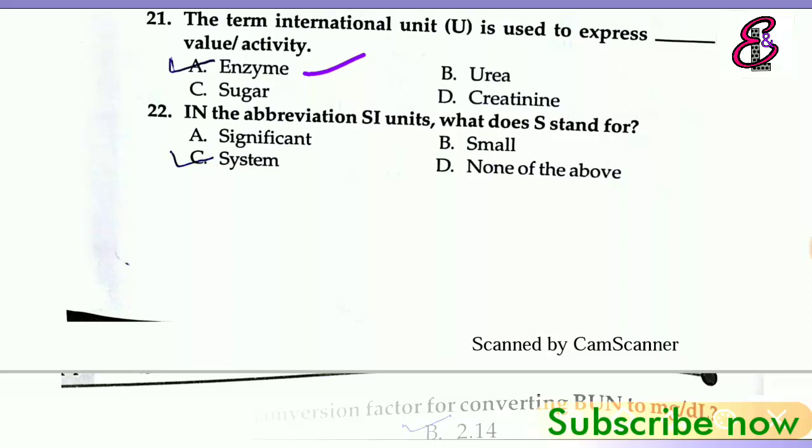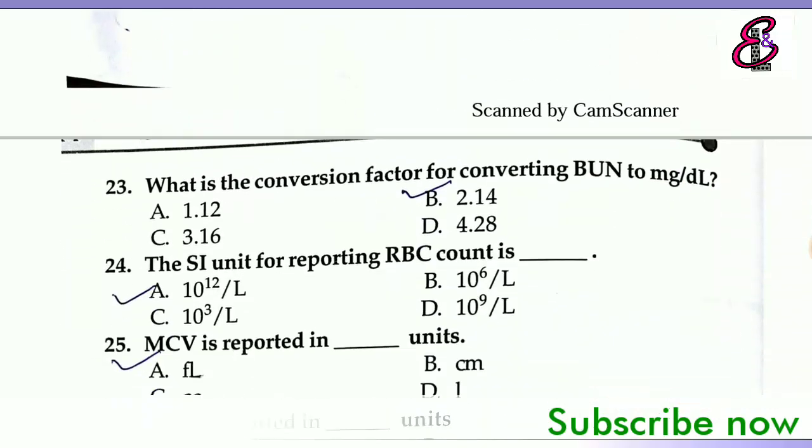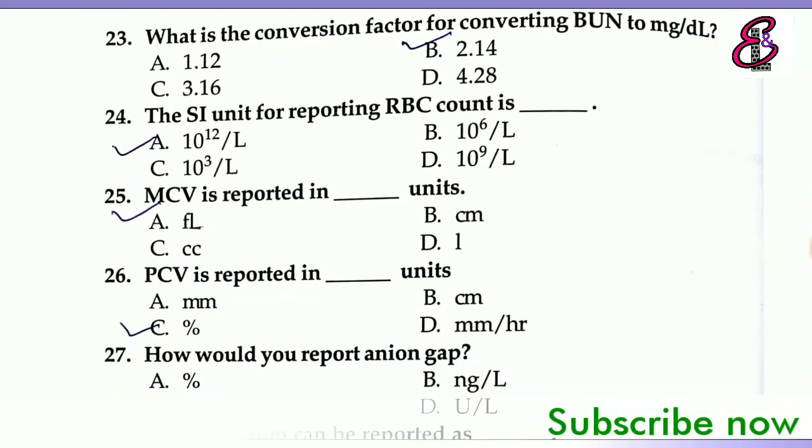Next question: What is the conversion factor for converting blood urea nitrogen to milligram per dL? The answer is 2.14.